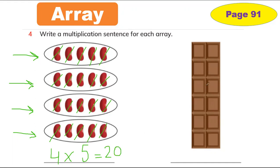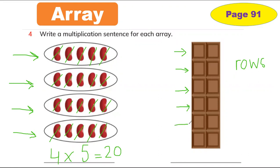Let's do the chocolate. First we have to look at the rows. How many rows in the chocolate? Let's find out how many chocolates are in the first row: one, two, three, four, five, and six.